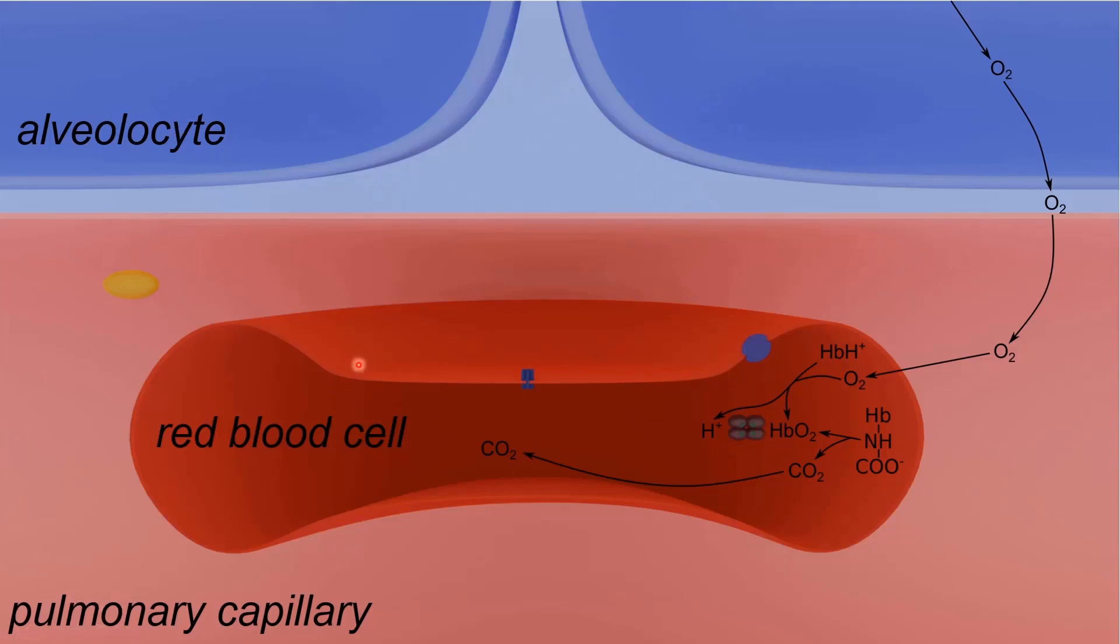Once moved to the blood from alveolar gas, oxygen enters the erythrocyte and binds to hemoglobin to form oxyhemoglobin. Since oxygenated hemoglobin has a lower affinity for CO2, the carbamino compounds dissociate and CO2 is released into the cytoplasm. In addition, oxyhemoglobin is a weaker buffer compared to deoxyhemoglobin, so hydrogen ions detach from it.